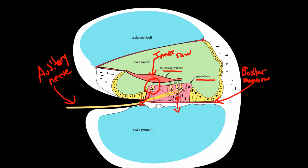To summarize: sound waves vibrate the scala vestibuli and scala tympani fluid, vibrating the basilar membrane, on top of which sits the organ of Corti with hair cells whose cilia tips are embedded in the tectorial membrane. The mechanical deformation of the cilia causes action potentials to be generated and sent down the auditory nerve. That's how we get from sound — pressure waves in the air — to actual action potentials.